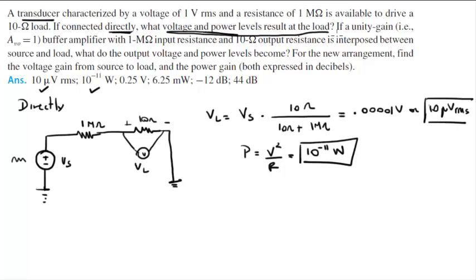So what they want you to do in the second part is: If a unity gain buffer amplifier with 1 megaohm input resistance and 10 ohm output resistance is interposed between